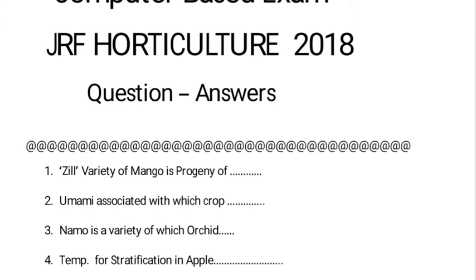Another question asks about umami associated with which crop. Umami is a type of pleasant aroma or pleasant flavor. It is a combination of the five basic tastes: sweetness, sourness, bitterness, and saltiness. Umami is mostly found in ripe tomato, so umami is related to ripe tomato. For more information regarding umami, please consult your teacher or seniors.